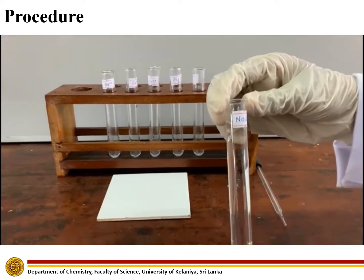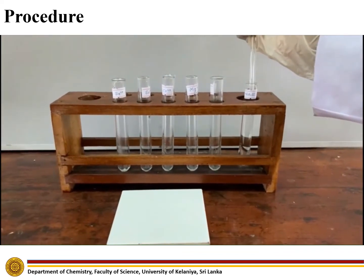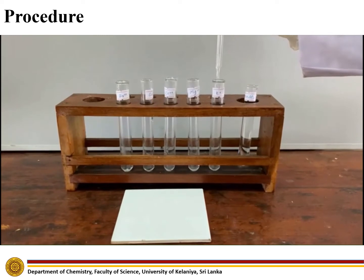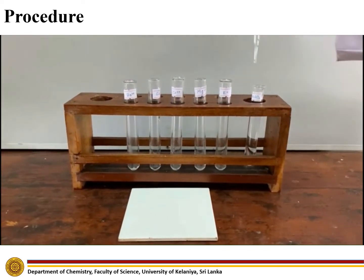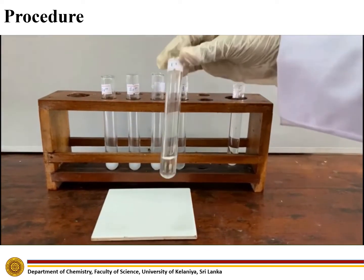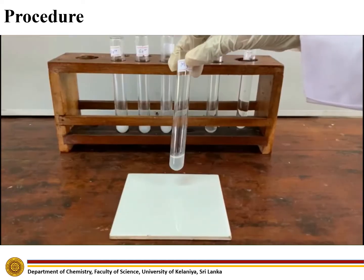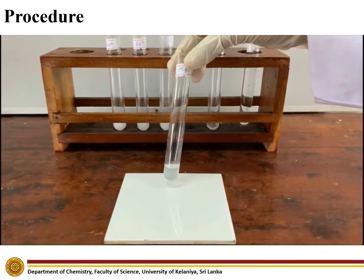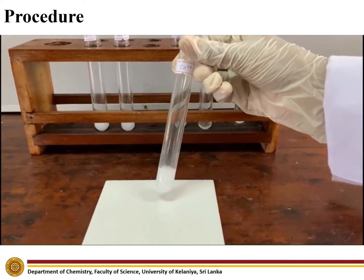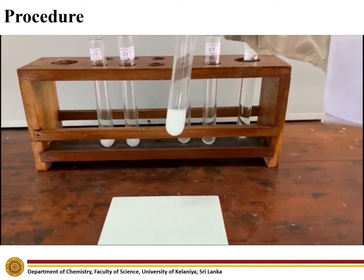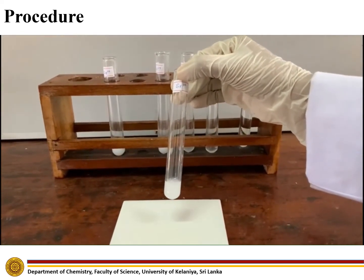Add sodium sulphate dropwise to the given cation solutions. It dissolves well in potassium ion solution. It partially dissolves in magnesium ion solution. A white precipitate forms in calcium ion solution and in strontium ion solution.